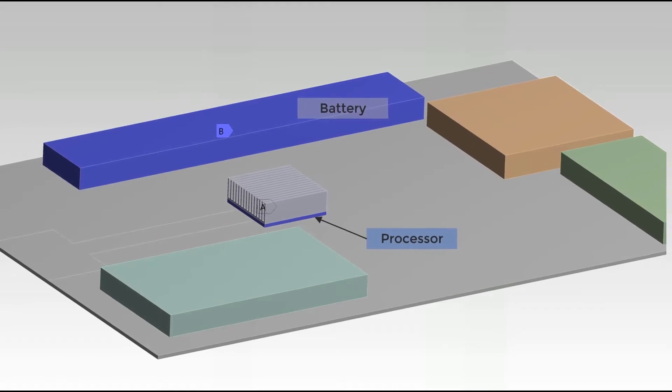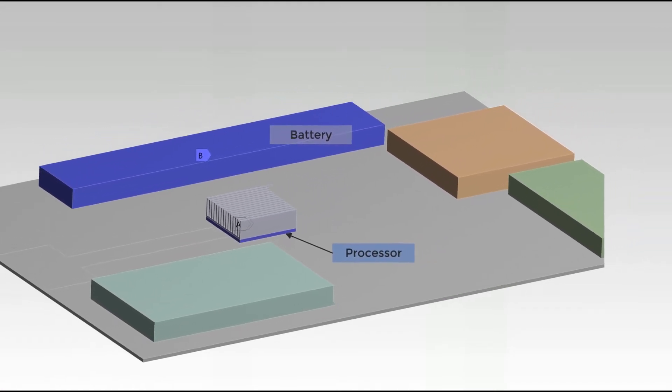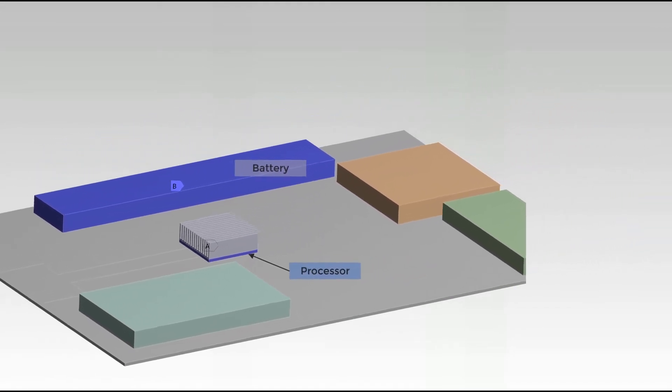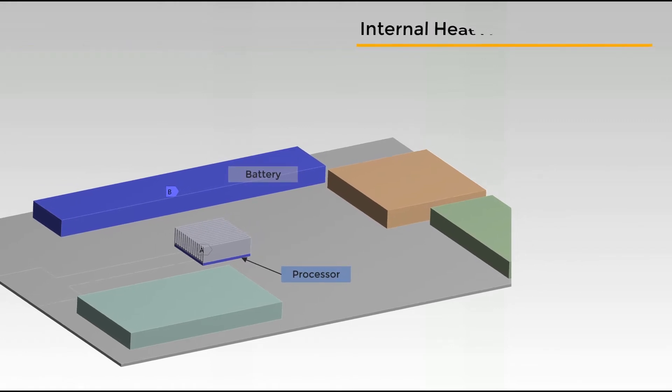In this case, we have two heat generating sources. One is the processor, and the second one is the battery. For both, we'll use internal heat generation boundary condition. Considering their volumes, we'll use these magnitudes, which is equivalent to approximately 28 watts for the processor and 18 watts for the battery.